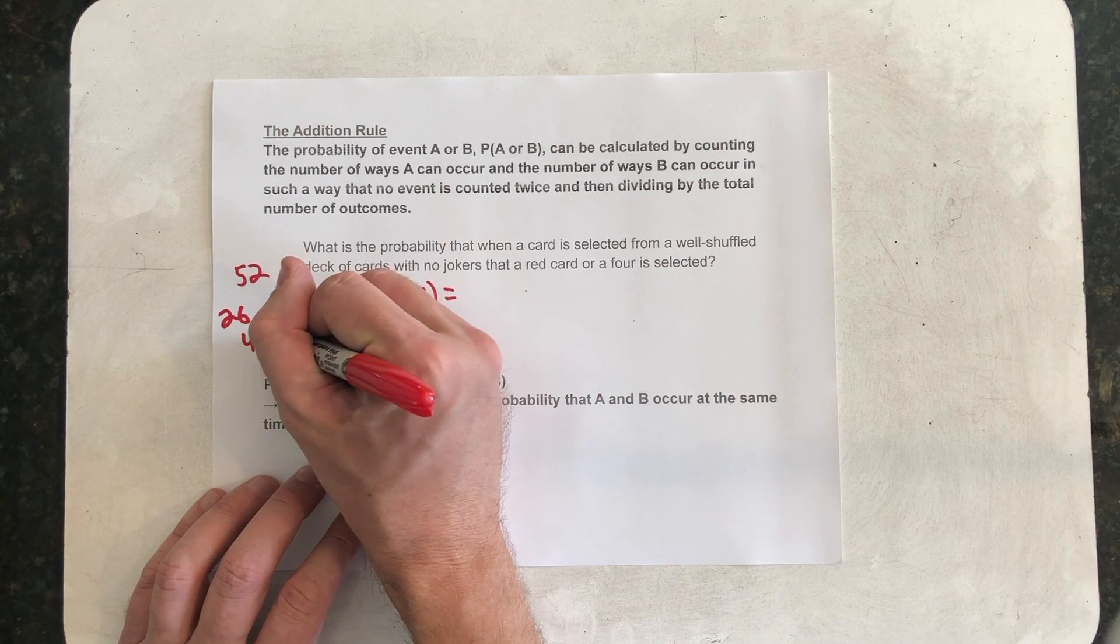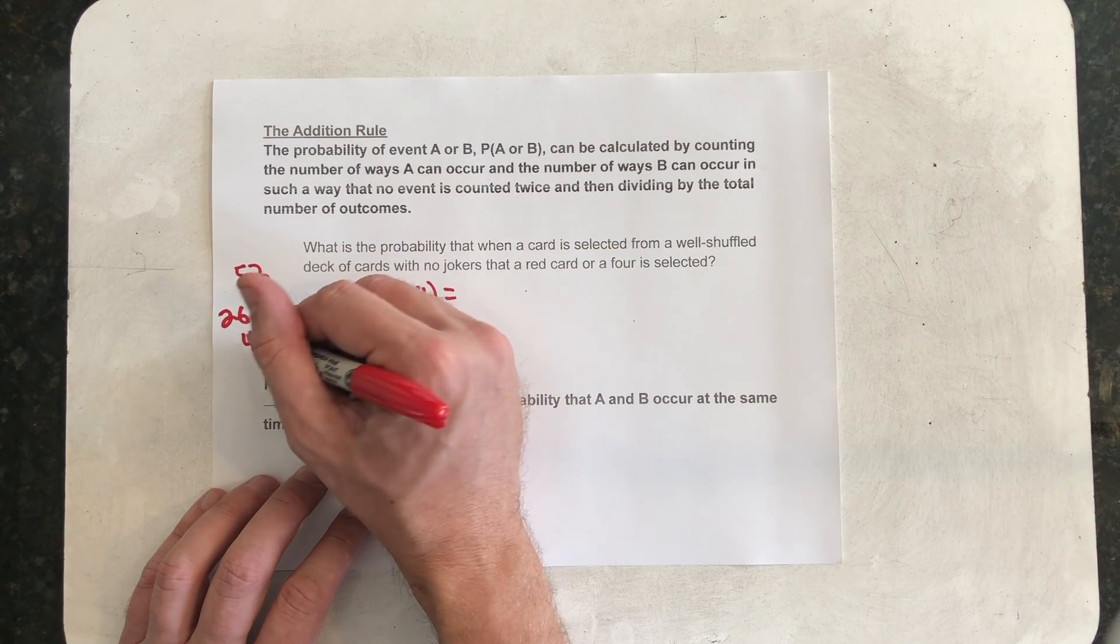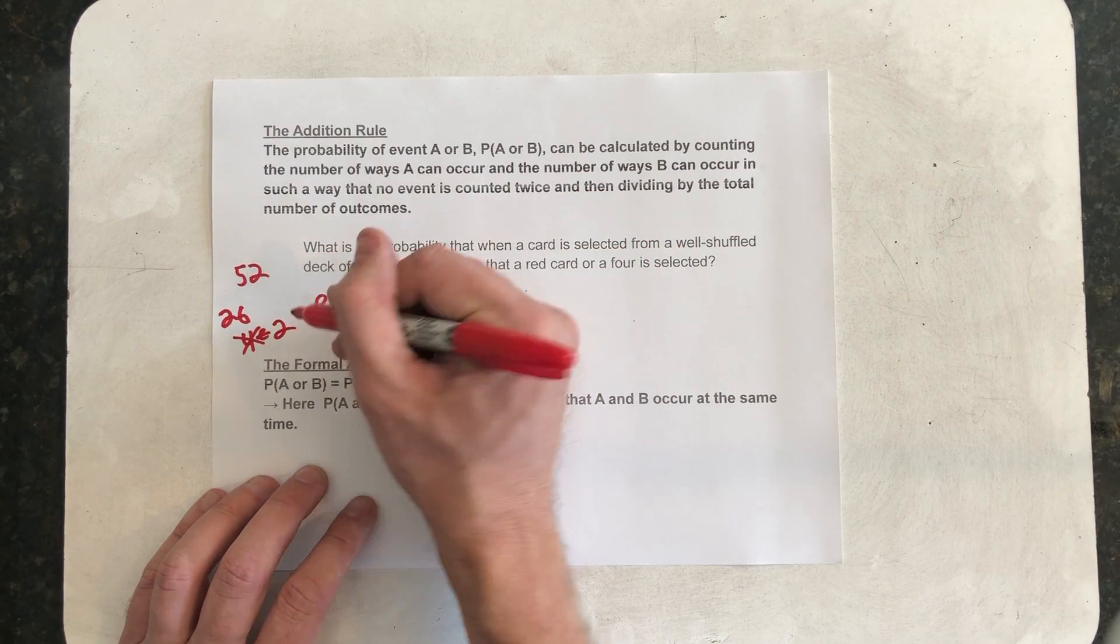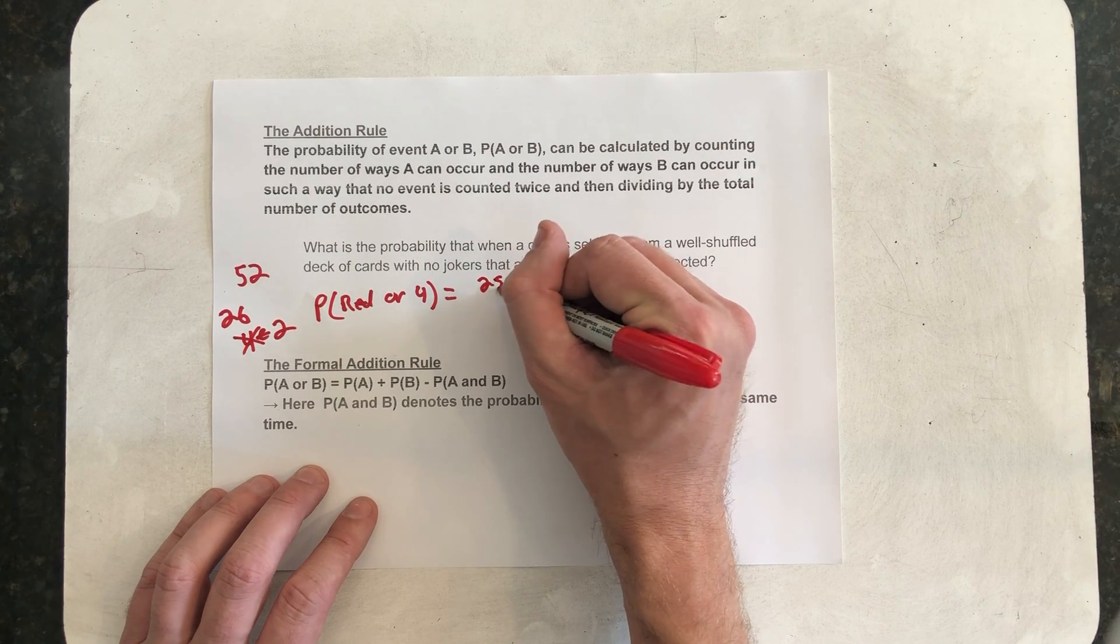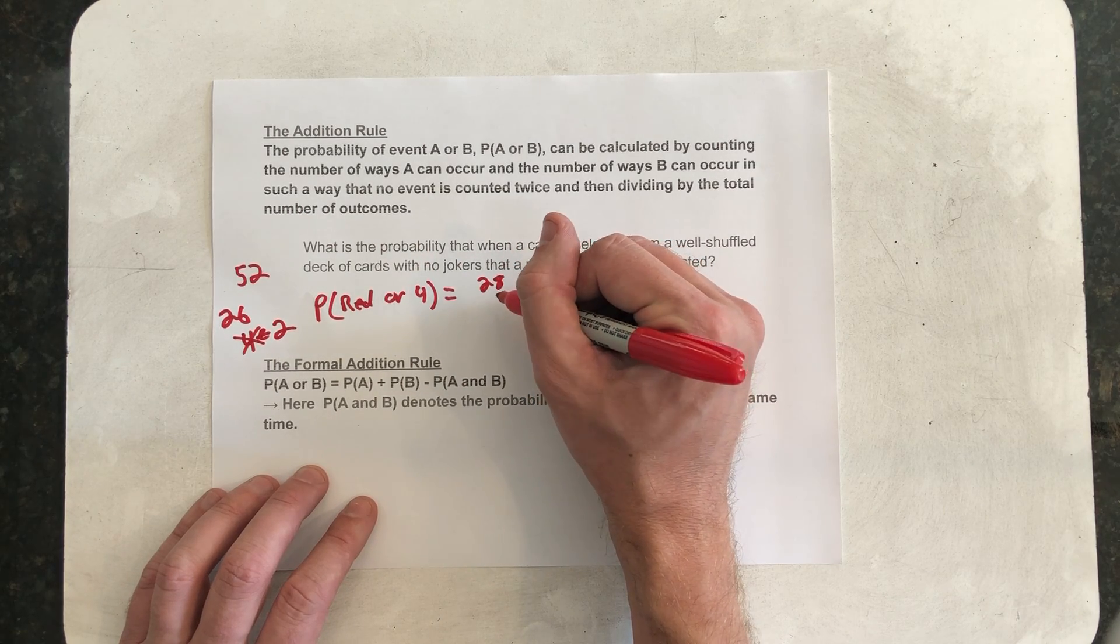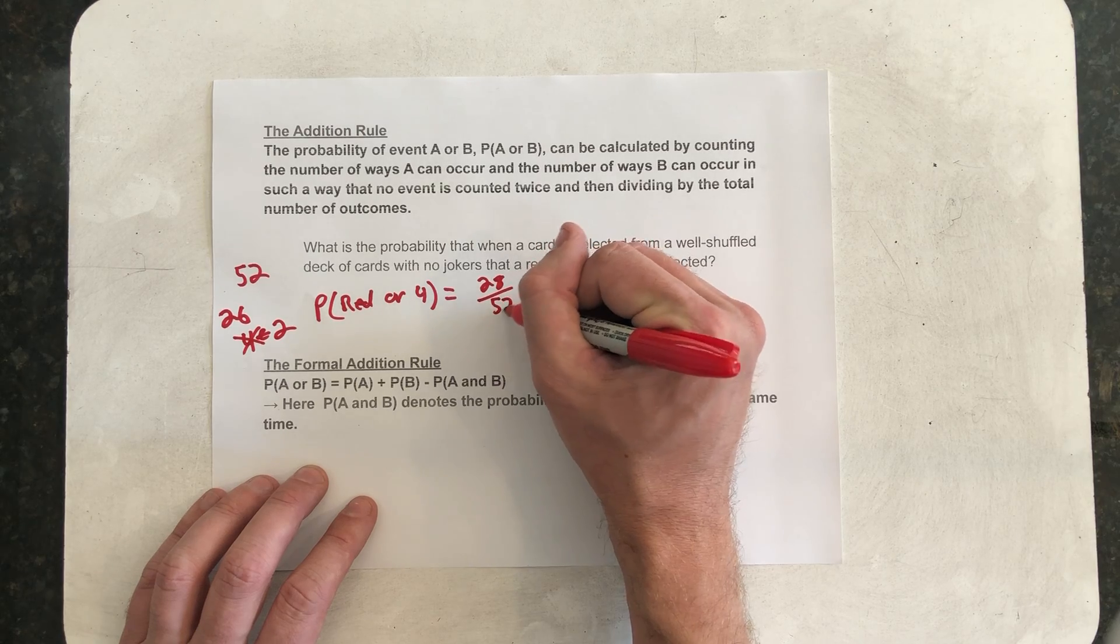But, 2 of these are already red, so I've already counted 2 of them. So, I don't need to count 4 of them. I only need to count 2 of them. So, there are 28 cards that are either red or a 4 out of 52.